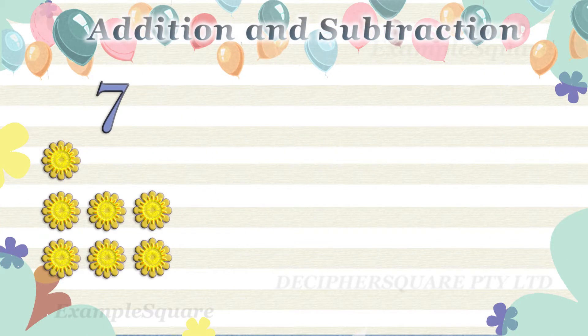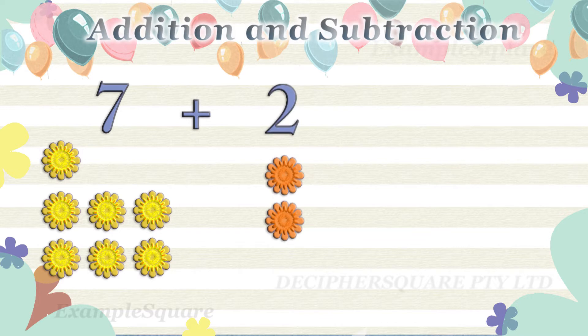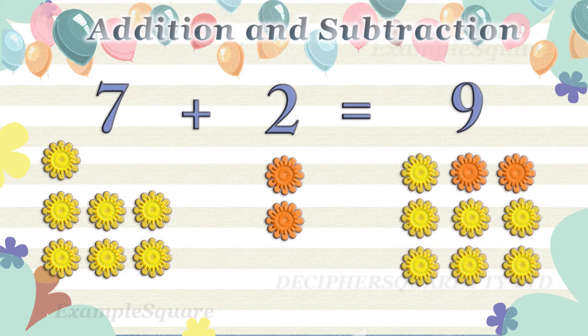There are seven yellow flowers and two orange flowers. How many flowers are there altogether? To find the total number of flowers, the yellow flowers and orange flowers need to be added together. Seven plus two equals nine. Together, there are nine flowers.